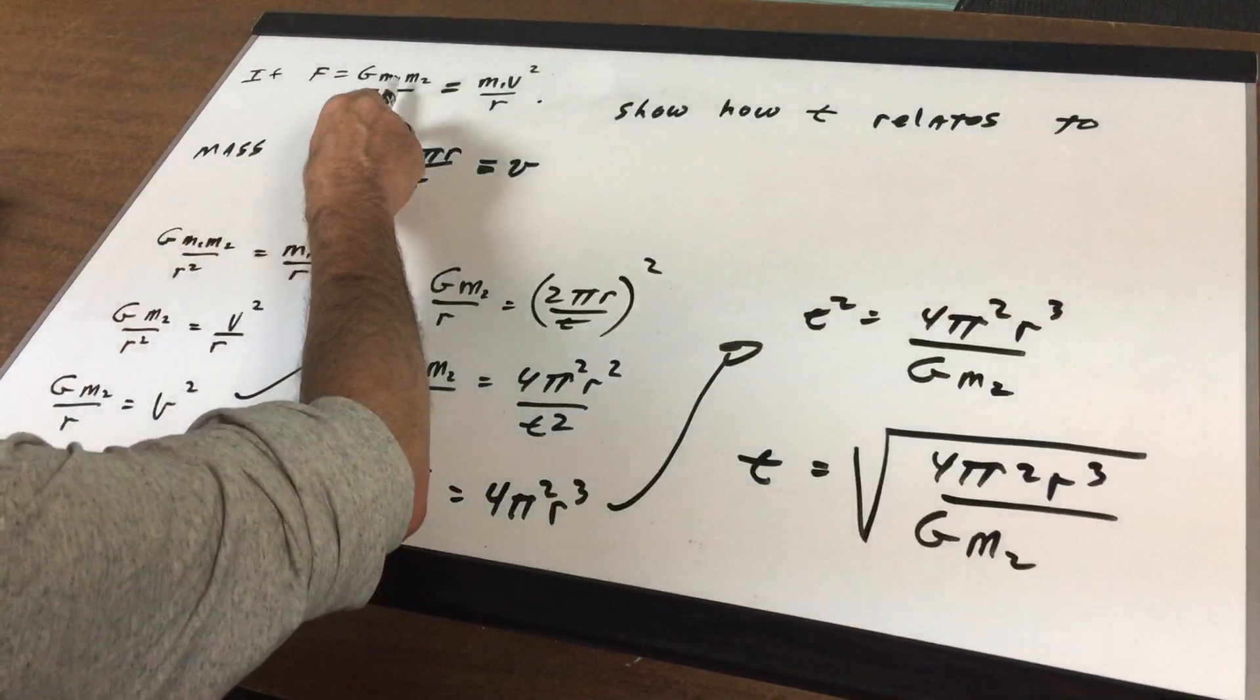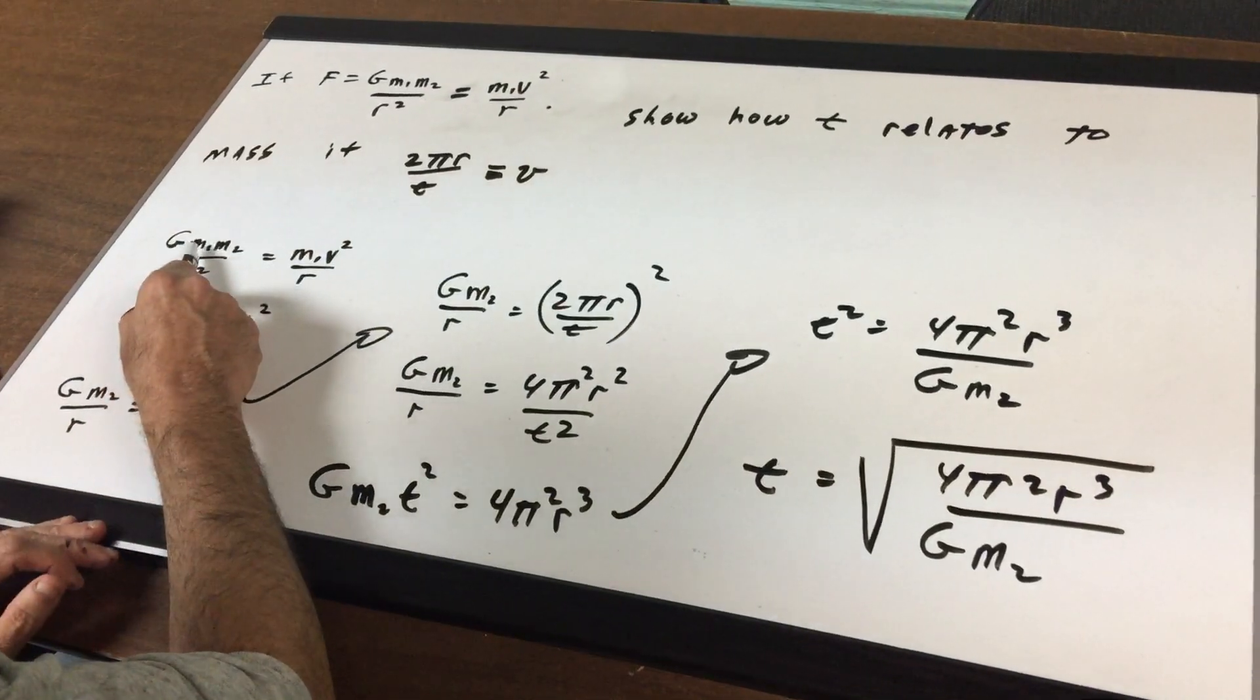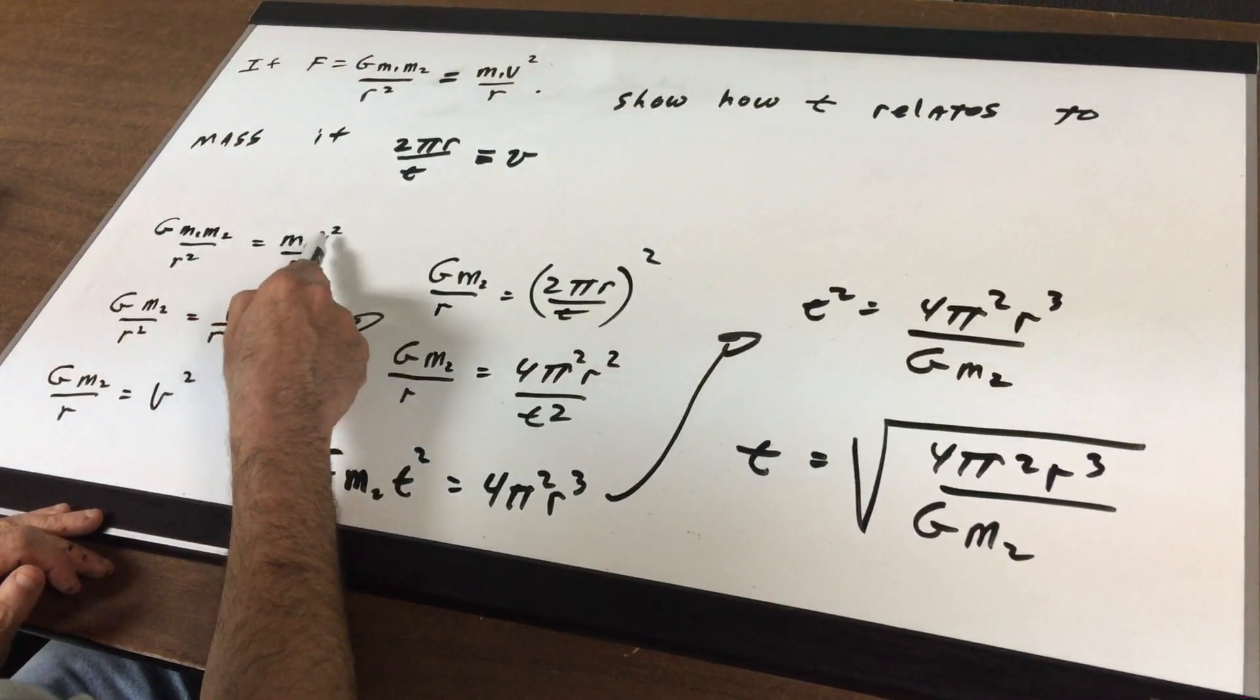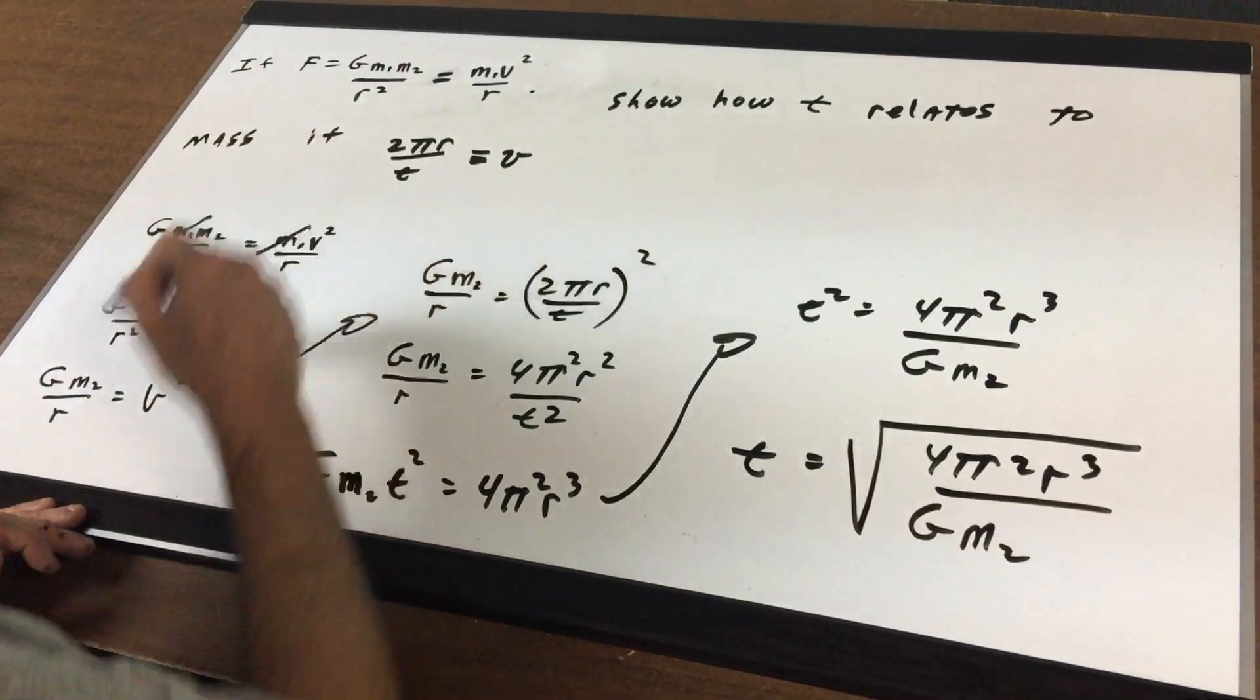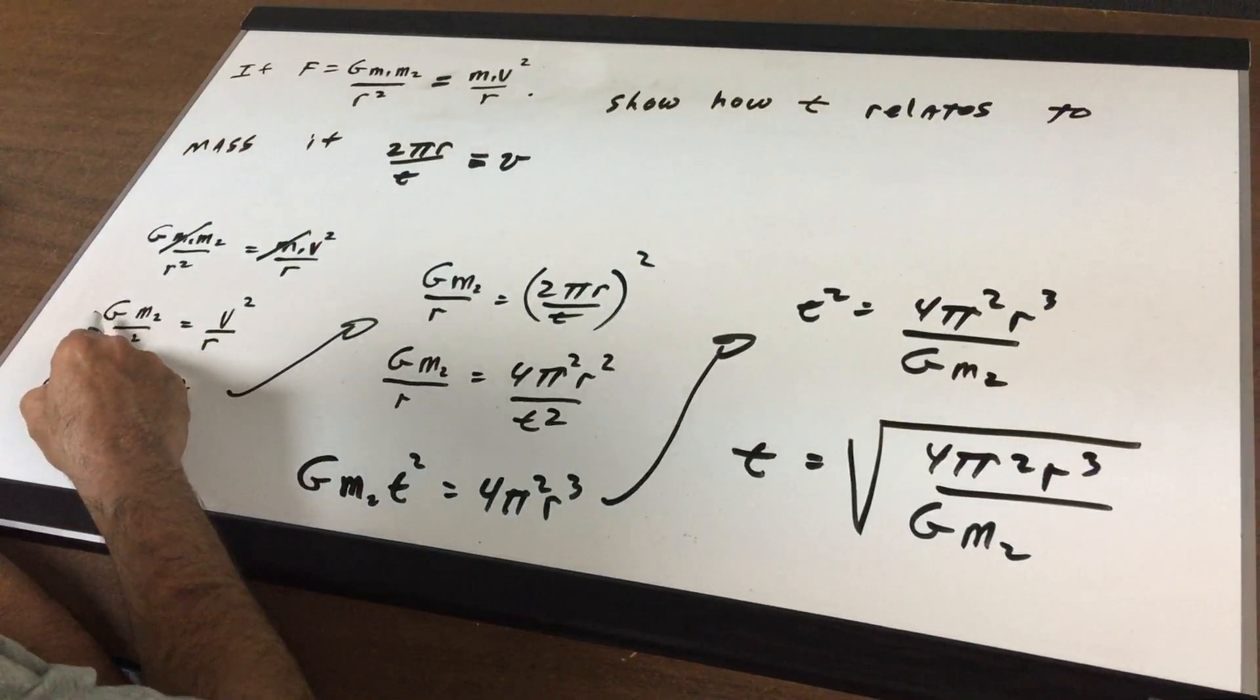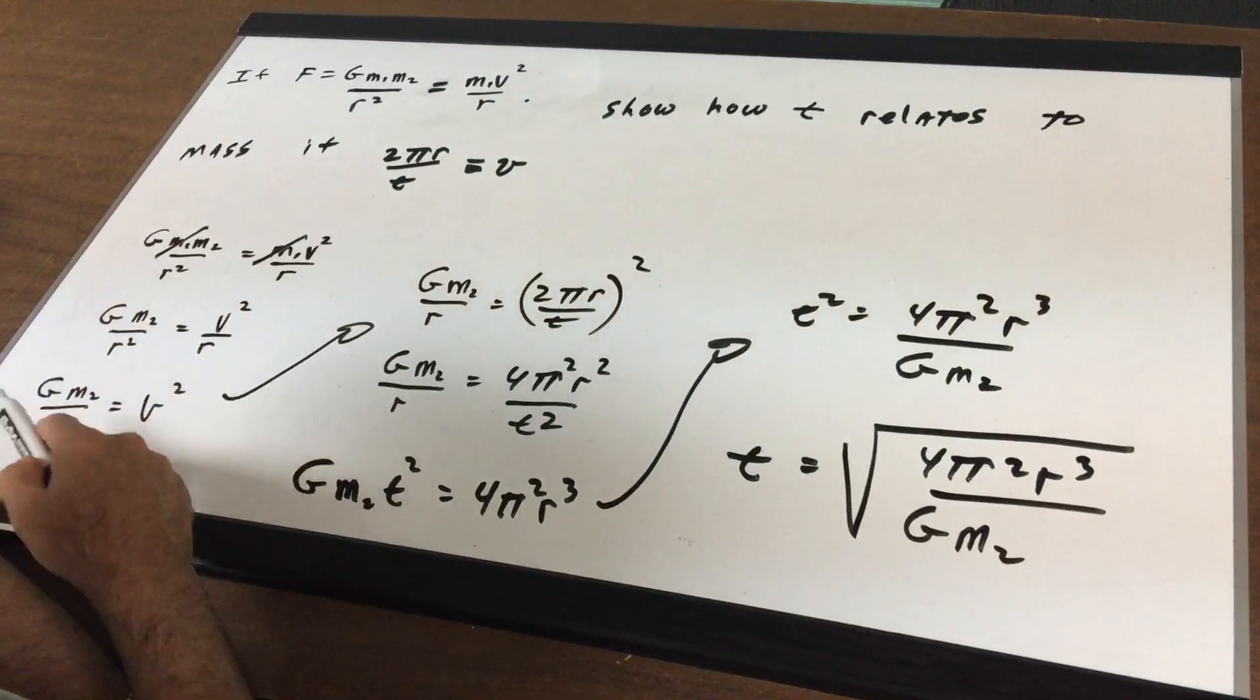The first thing I'm going to do is set these two equations equal: g m1 m2 over r squared equals m1 v squared r. I'm going to cross out the masses on both sides. That gives me g m2 r squared equals v squared over r.